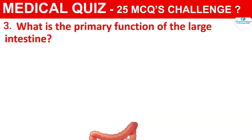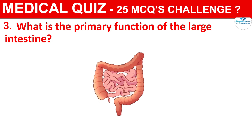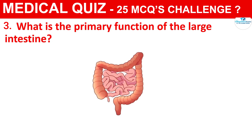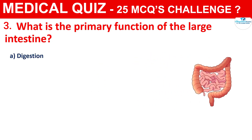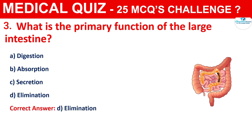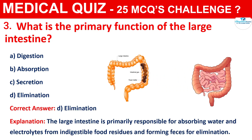Question 3: What is the primary function of the large intestine? Your options are Digestion, Absorption, Secretion, or Elimination. The correct answer is D, i.e., Elimination. The large intestine is primarily responsible for absorbing water and electrolytes from indigestible food residues and forming feces for elimination.